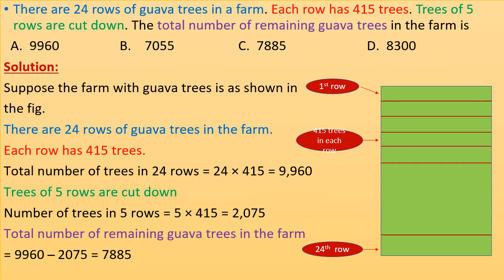Suppose the farm with guava trees is as shown in the figure. There are 24 rows of guava trees in the farm, and each row has 415 trees. So total number of trees in 24 rows is 24 × 415 = 9,960.